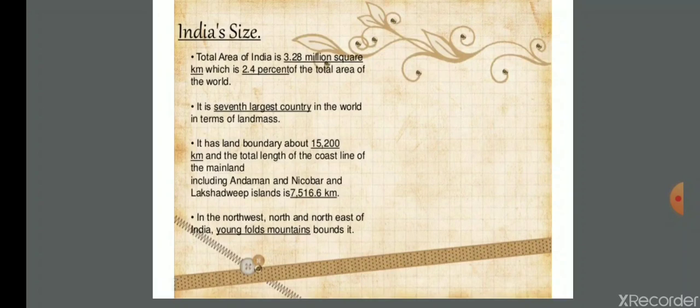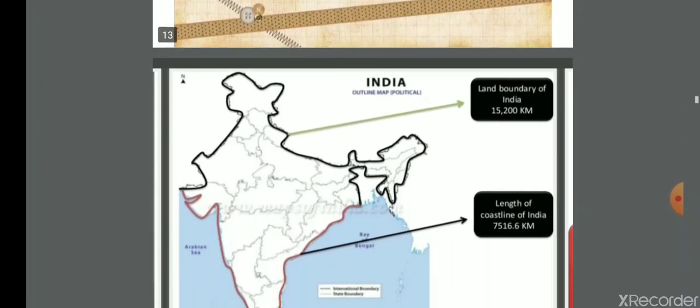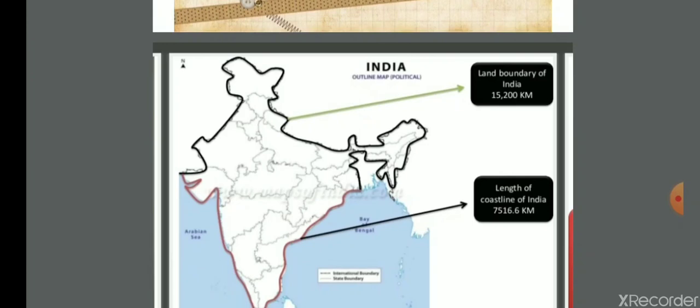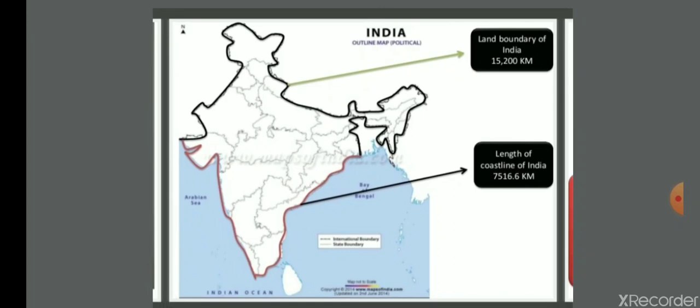In the north-west, north, and north-east of India, young fold mountains bound it. The land boundaries shown by black lines connect India by land — this boundary is 15,200 km. The coastline boundary, shown by red lines, is the boundary along the sea, measuring 7,516.6 kilometers.